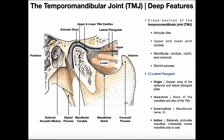Here's the mandibular notch, which separates the coronoid process anteriorly from the mandibular condyle posteriorly. The mandibular condyle sits in the mandibular fossa up here — this groove or basin that is part of the temporal bone. Down here is the styloid process; if we continued inferiorly we'd see the origin of the stylomandibular ligament. Posterior to the mandibular condyle is the external acoustic meatus — the canal — and behind that is the tympanic membrane, which separates the outer ear from the middle ear.